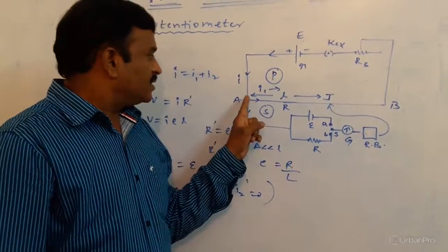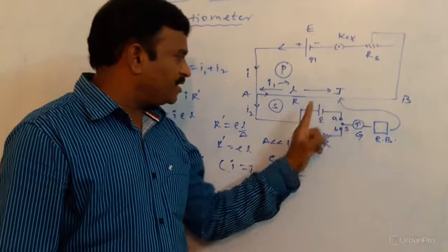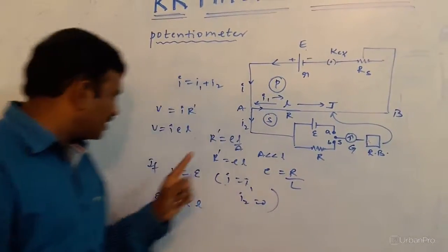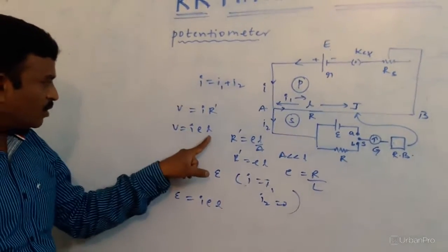That is the reason the EMF potential drop here should be equal to here. So, by calculating the potential drop is V equals I ρ L.